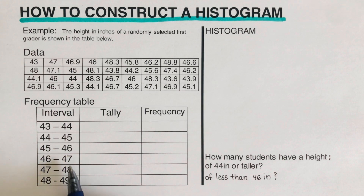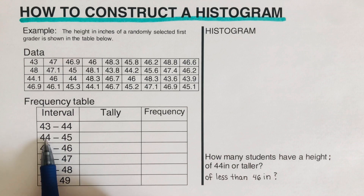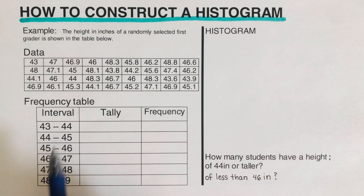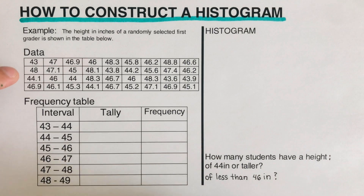So if we have a value of 44, we tally it in the second row, because the upper bound of the first interval is 43.9999 repeating — it is not truly 44 and is not included. Now let's go through and tally the data.